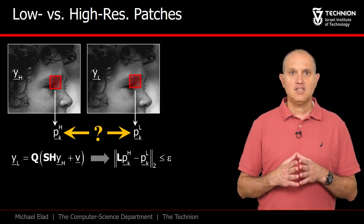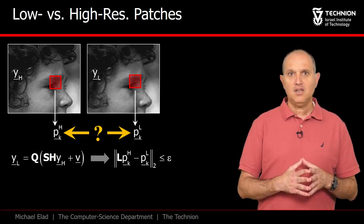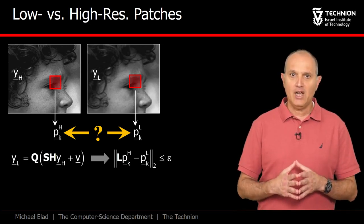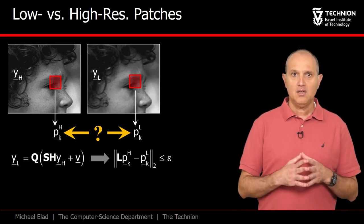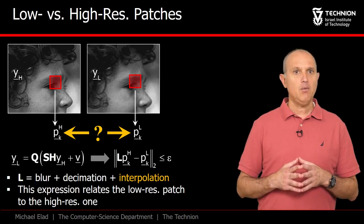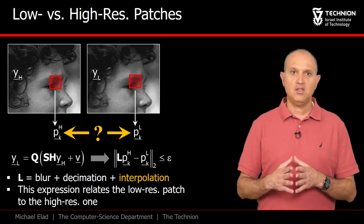This relation suggests a similar connection on the patches, which says that if we take the high resolution patch and apply a linear operator L on it, we should get close to its matched low resolution patch. L will include the effects of the blur, the decimation, and the interpolation.